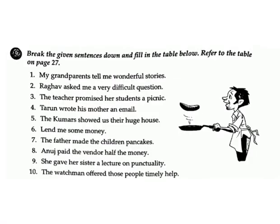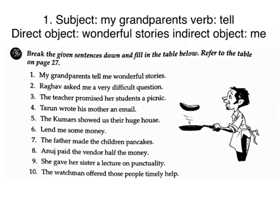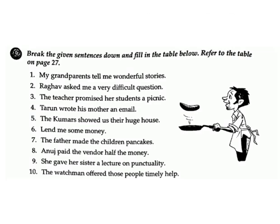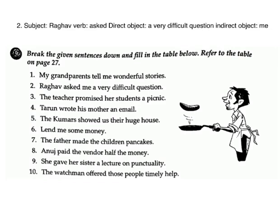Exercise D: Break the given sentences down and fill in the table below. 1. My grandparents tell me wonderful stories. Answer — subject: my grandparents; verb: tell; direct object: wonderful stories; indirect object: me. 2. Raghav asked me a very difficult question. Answer — subject: Raghav; verb: asked; direct object: a very difficult question; indirect object: me.